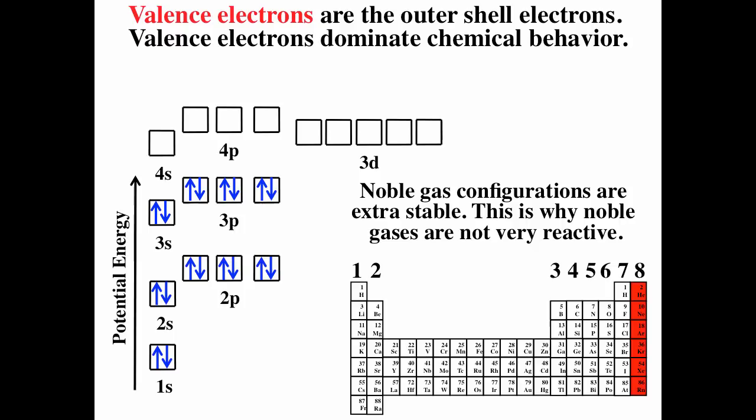We've learned that noble gases have a very stable electron configuration because they have full subshells, and elements tend to react to get noble gas configuration by either losing, gaining, or sharing electrons.